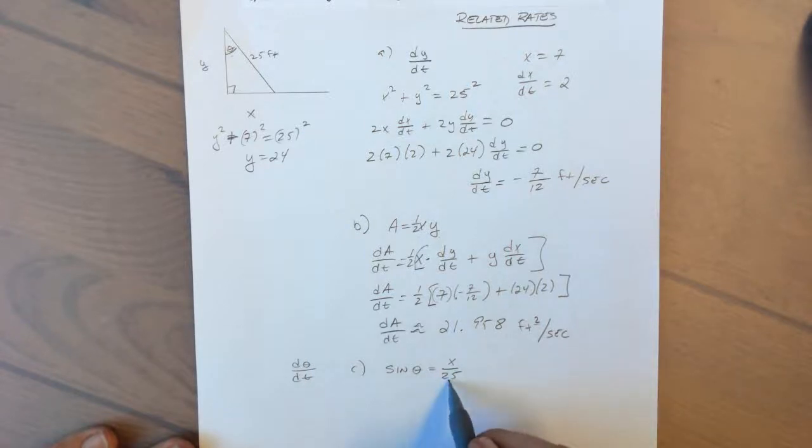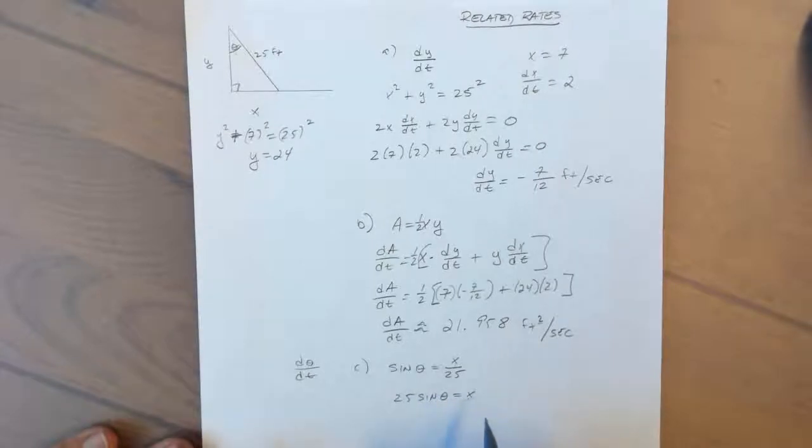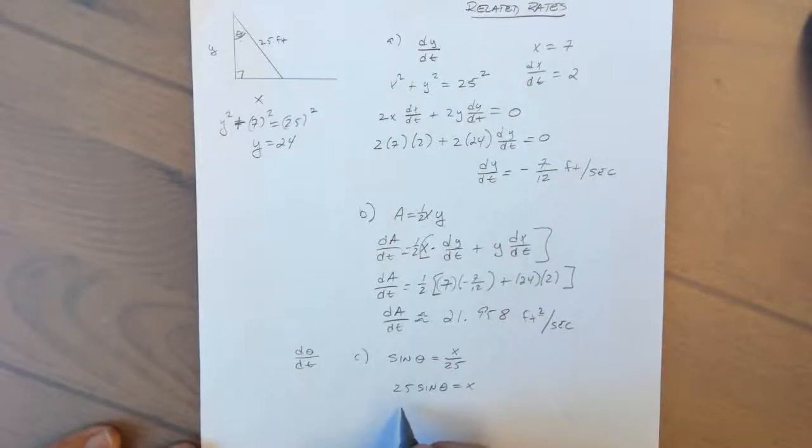Now because this is a constant, we can substitute the value 25. If this was a variable that was changing, we'd have to leave it as a variable. So we have 25 sine theta equals x. Again, x and theta are changing with respect to time, so our derivative here would be 25, the derivative of sine is cosine theta, and then our chain rule times d theta/dt is equal to dx/dt.